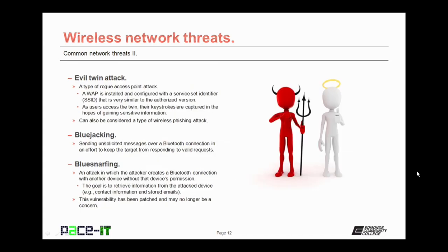Related to the rogue wireless access point attack is the evil twin attack. A WAP is installed and configured with an SSID that is very similar to the authorized version. As users access the evil twin, their keystrokes are captured in the hopes of gaining sensitive information, like the credentials to log into the actual wireless network. The evil twin attack can also be considered a type of wireless phishing attack.